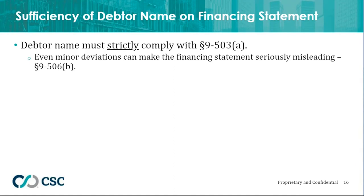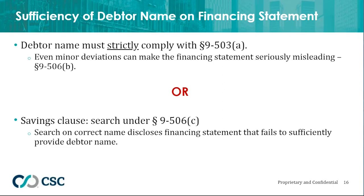Note that if a financing statement shows up on a search of the correct name, that doesn't mean the name is correct — it just means the incorrect name does not render the financing statement seriously misleading. So if there is any deviation in the debtor name, the issue becomes how it will show up under the search logic. Therefore, search logic is very important in this process.